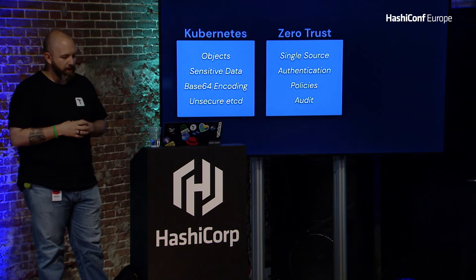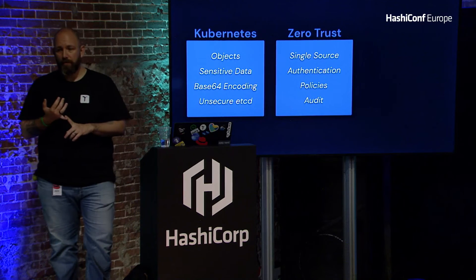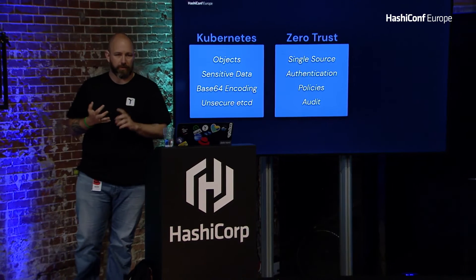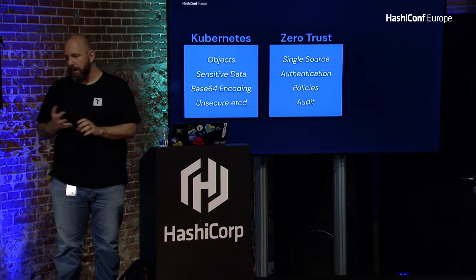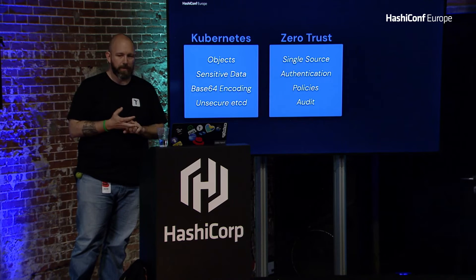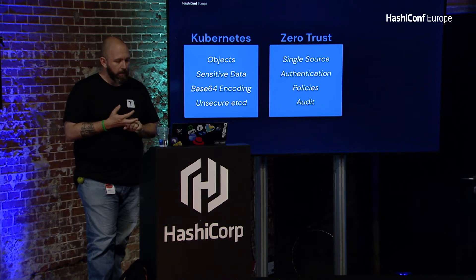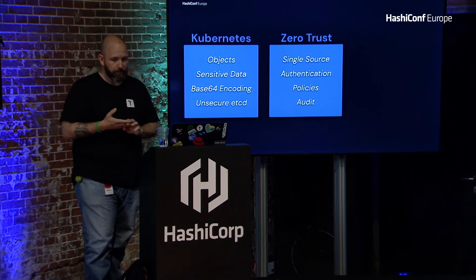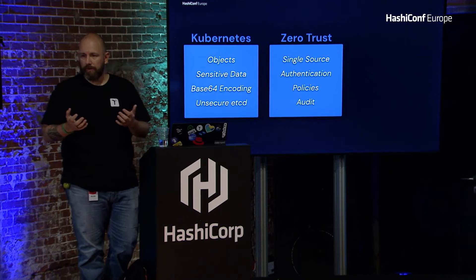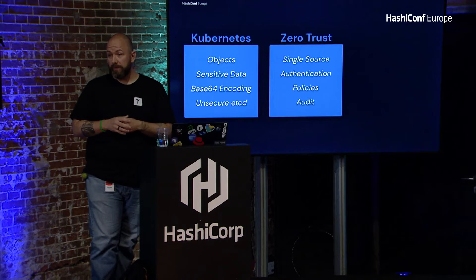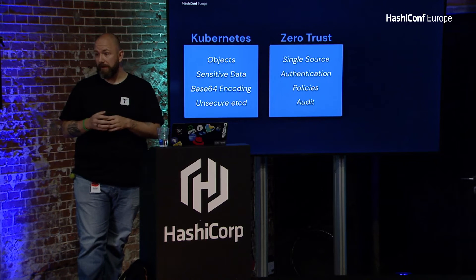The second thing we want in every environment today is zero trust. How do we define it? Really easy: a single source for everything — authentication, credentials, tokens, certificates. We want authentication itself, and it's not only about a user accessing a website or database. It's about the platform itself authenticating to that single source of truth, as well as the application and the users. We want everything controlled with policies and access control lists. And the last, really important for regulation and compliance, is auditing — you need to track what happened in your environment.